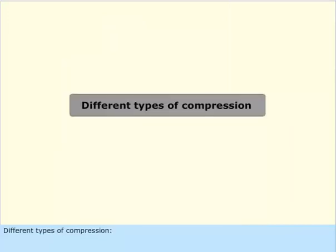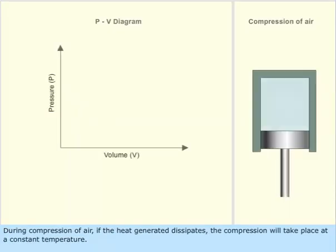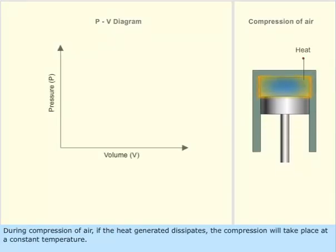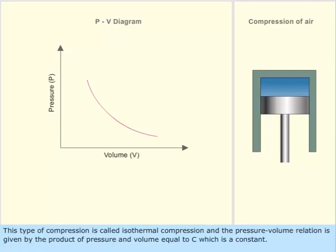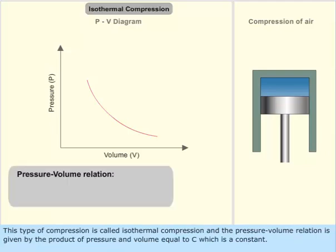Different types of compression. During compression of air, if the heat generated dissipates, the compression will take place at a constant temperature. This type of compression is called isothermal compression, and the pressure-volume relation is given by the product of pressure and volume equal to C, which is a constant.